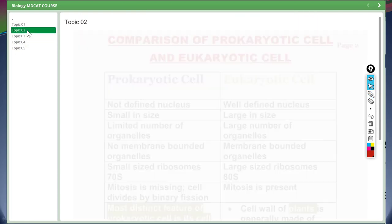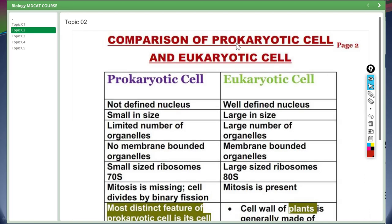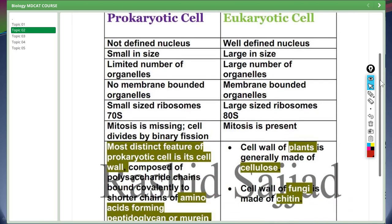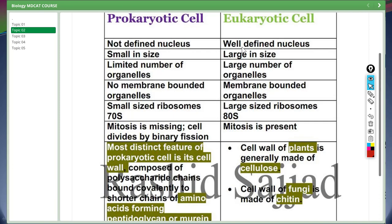Which is comparison of prokaryotic cell and eukaryotic cell. Prokaryotic cells do not have defined nucleus. Eukaryotic cells have a well defined nucleus. Prokaryotes are small in size like bacteria, which cannot be seen with naked eyes. Whereas mostly eukaryotes are large in size, like we human beings are eukaryotes.